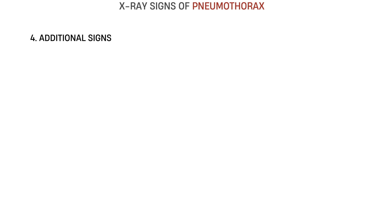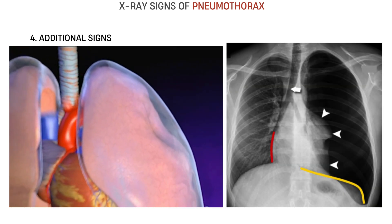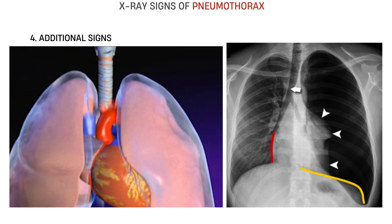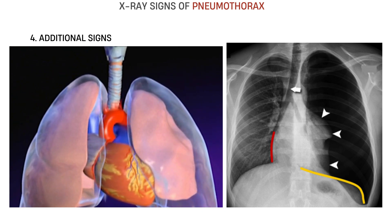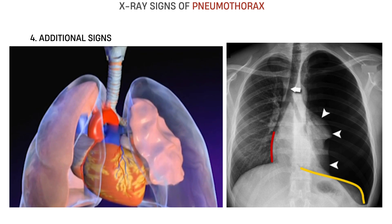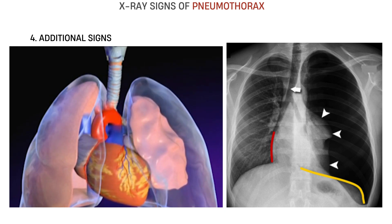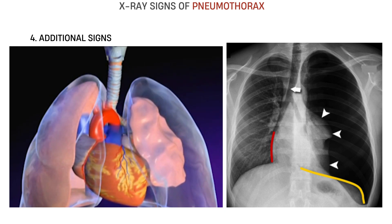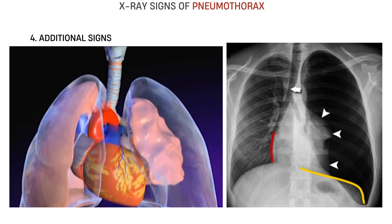Now, the additional signs to look for: if pressure builds up rapidly, the air cannot escape — we call it a tension pneumothorax. This is a medical emergency. You'll see mediastinal shift away from the affected side, a depressed diaphragm, widened intercostal spaces, and often tachycardia and hypotension on exam. Why does it happen? Air keeps entering the pleural space with each breath but doesn't exit. This builds pressure and pushes the heart, vessels, and other lung away. It's not just collapse — it's cardiac compression. That's why this kills.